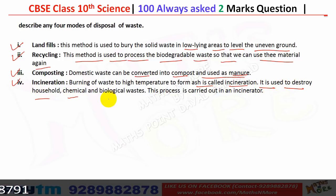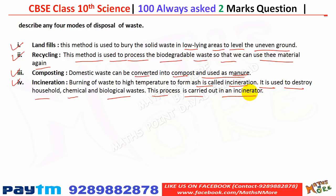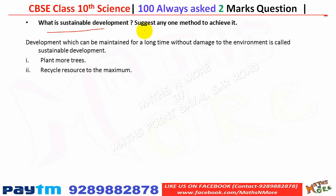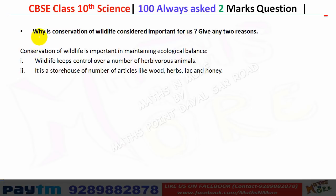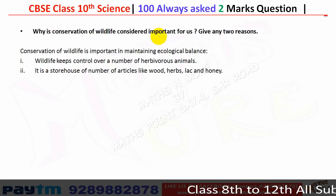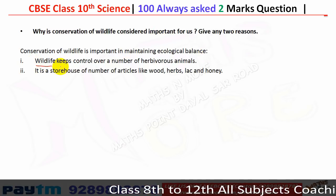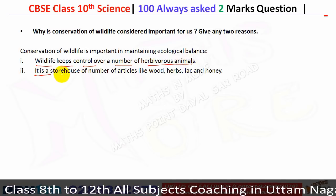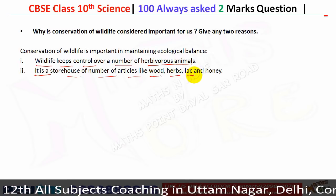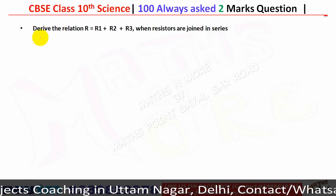Sustainable development is development that can be maintained for a long time without damage to the environment. Methods to achieve it include planting more trees and recycling resources to the maximum. Conservation of wildlife is important for maintaining ecological balance, keeping control over the number of herbivores, and as a storehouse of products like wood, herbs, lac, and honey.